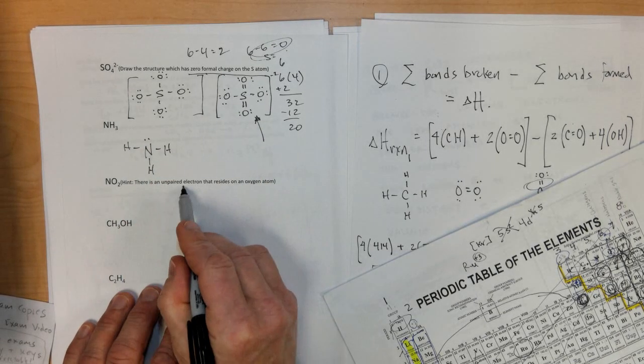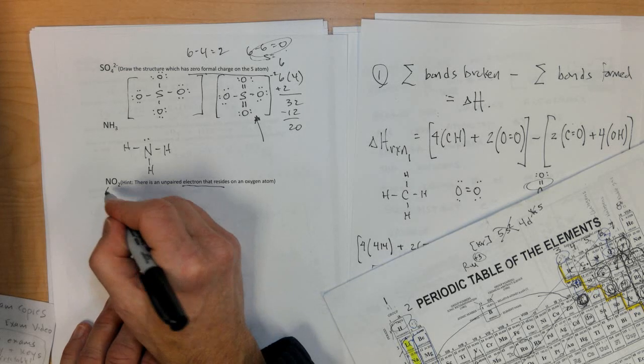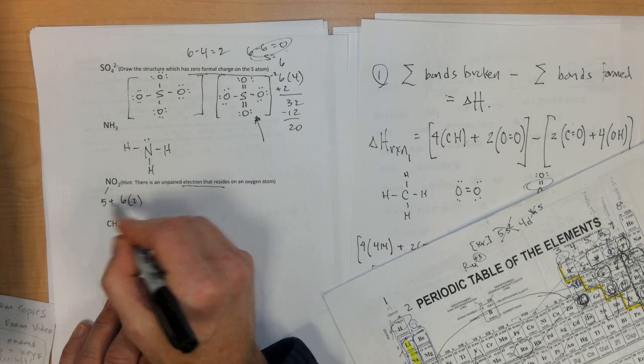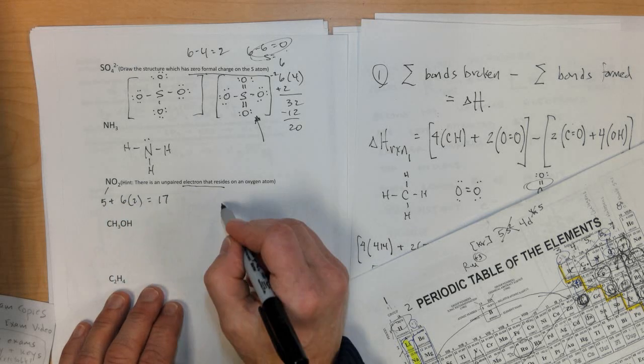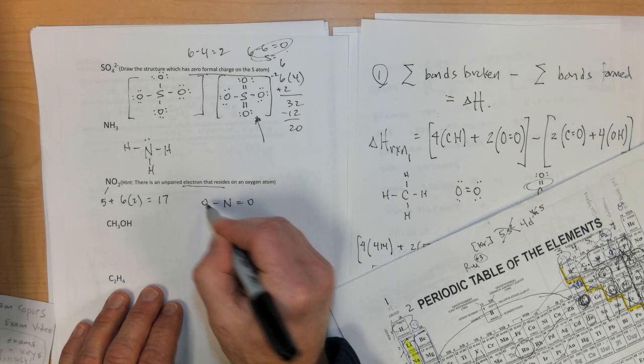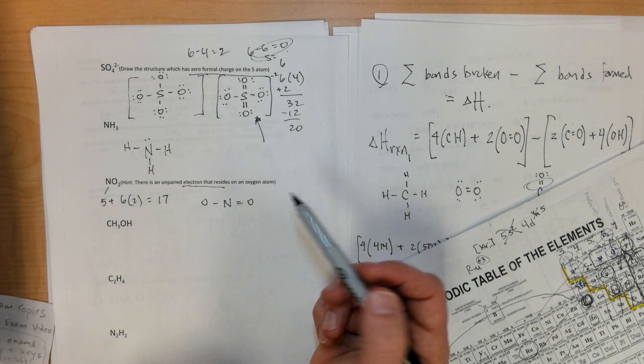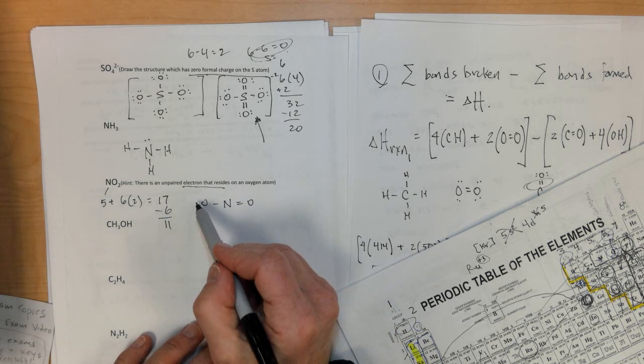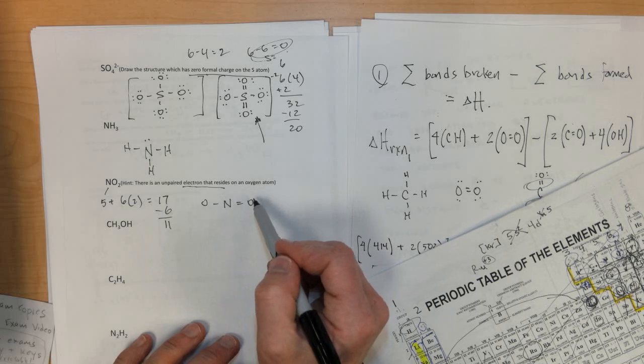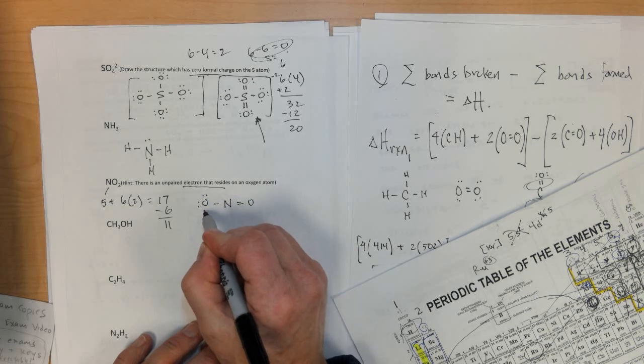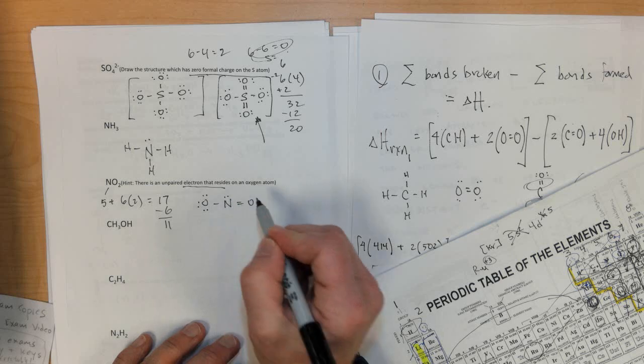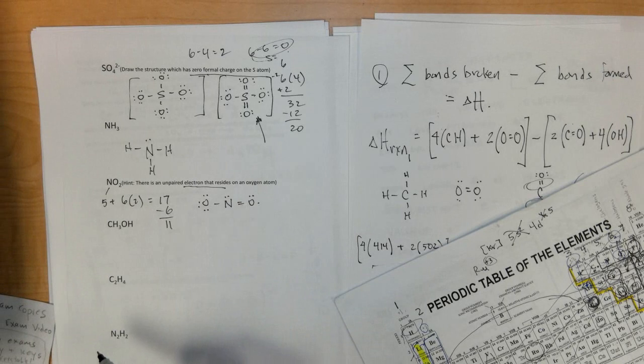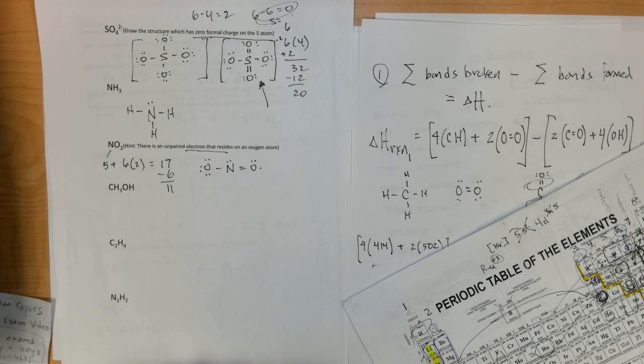NH3, NO2, unpaired electron resides on the oxygen. So nitrogen has 5. Oxygen is 6 times 2. So that's 12 plus 5 is 17. N, O, O. Just making a guess here. 2, 4, 6. That leaves me with 11 electrons. 2, 4, 6, 8, 10, 11. 2, 4, 6, 8, 10, 11. Electron deficient oxygen here. Totally unfair. Totally evil electron structure.